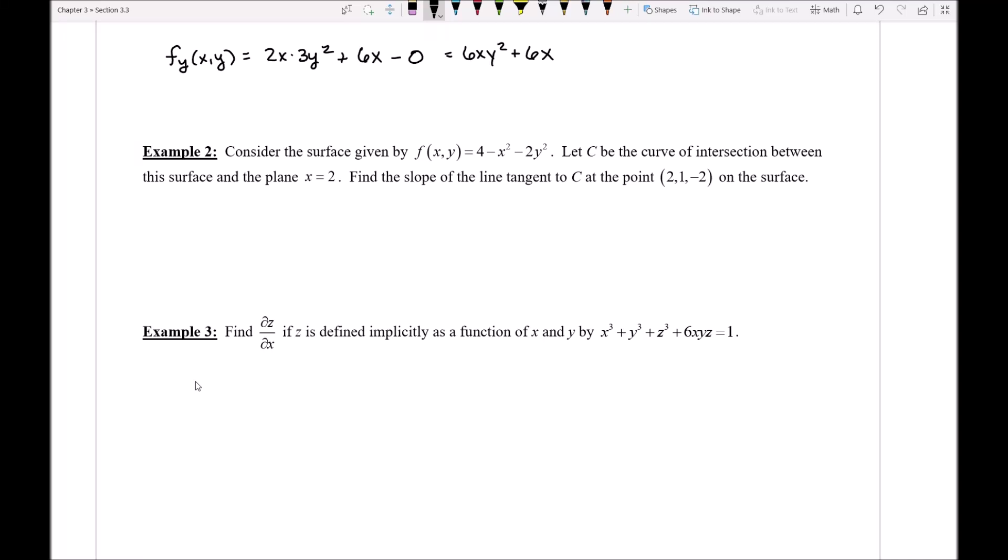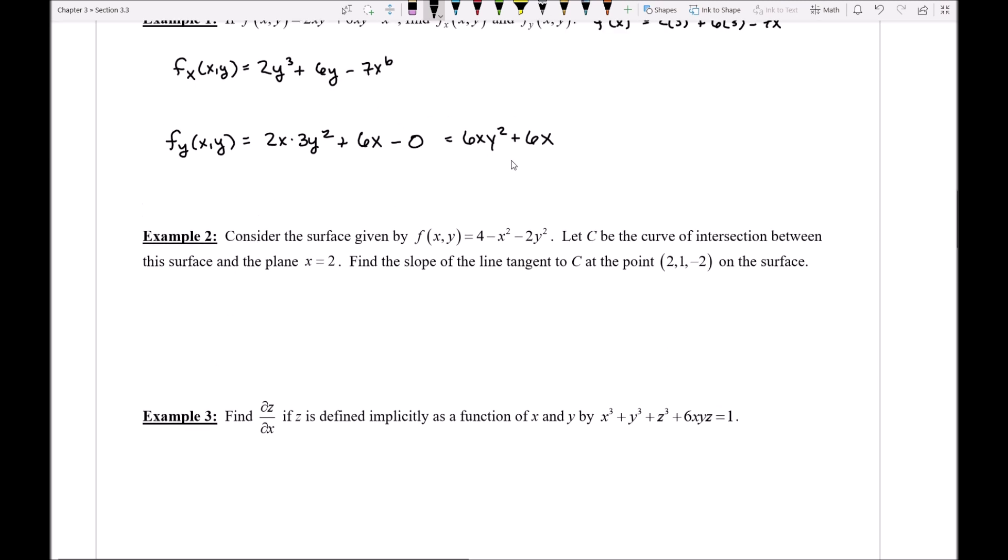In example two here, we're going to start to take a look at putting partial derivatives to use. How am I actually going to use a partial derivative which will produce a formula? How can I use that formula to actually tell me the slope of a tangent line on my surface?